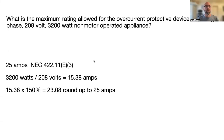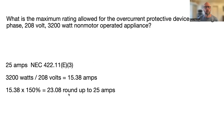We go to NEC 422.11(E)(3) and do a little Ohm's Law. We take 3200 watts divided by 208 volts, which equals 15.38 amps. Then 422.11(E)(3) tells us to take up to 150% of the non-motor-operated appliance load, giving us 23.8 amps. We round up to 25 amps because per Table 240.6(A), that is one of the standard overcurrent protection device sizes.